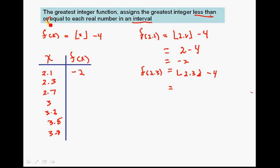So the real number is 2.3. The greatest integer that is less than that is going to be 2. 2 minus 4 equals negative 2. So f(2.3) is negative 2. Look at this, there's a pattern developing.